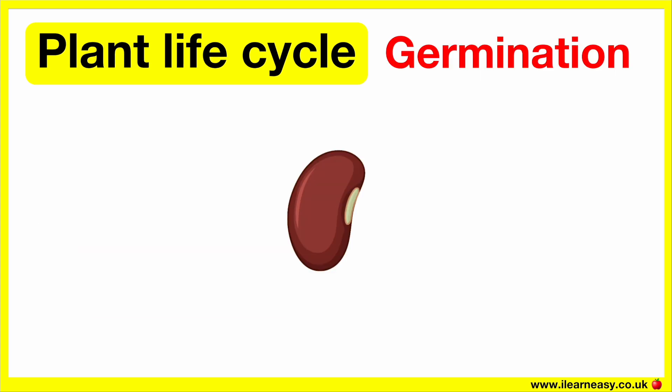When a seed is planted in the ground, or it falls from a plant into the soil, it begins to grow. During the germination stage, the plant will begin to sprout from the seed. The hard shell around the seed will soften and split open.